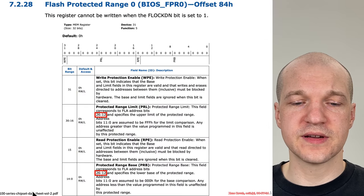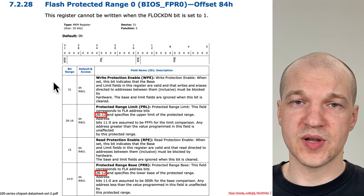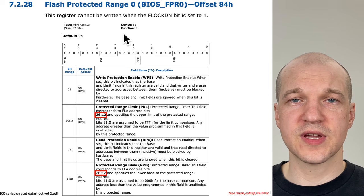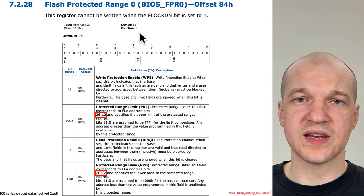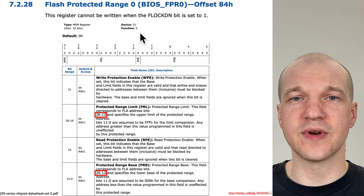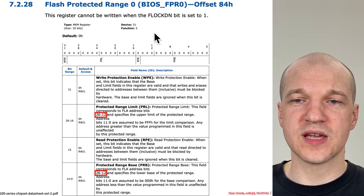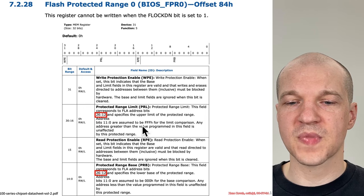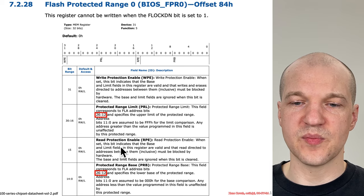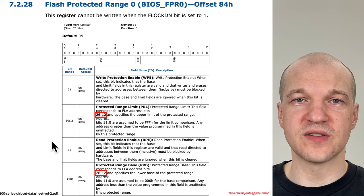Flipping to the 100-series chipset datasheets, it looks a little bit different. We don't have something in the SPI bar memory-mapped IO range. Instead, the protected range registers are found in device 31 function 5 — that was the SPI device that had a pointer in its BAR 0 to a SPI bar area where the flash read and write registers were. In that same range, at device 31 function 5 and offset 84, you start seeing the protected range registers. Everything looks basically the same in terms of there being a base, a limit, a write protect, and a read protect, but these newer systems do support a larger flash linear address range.